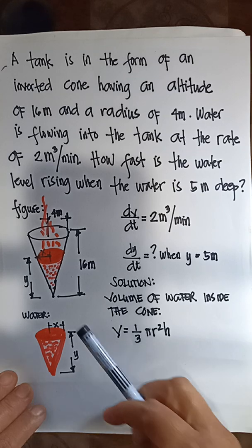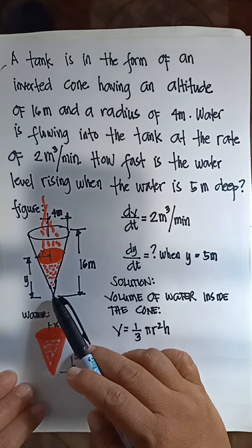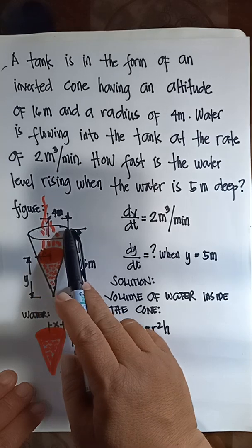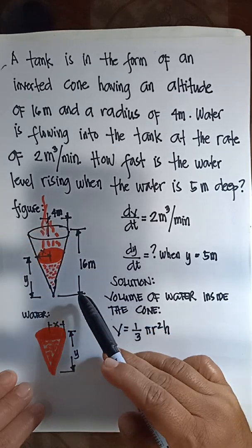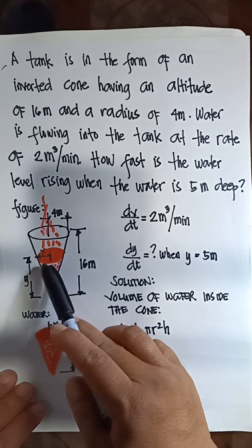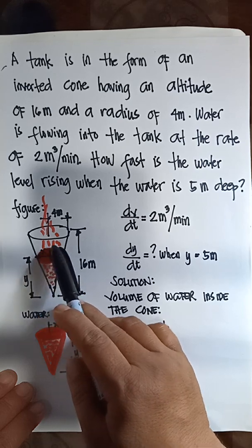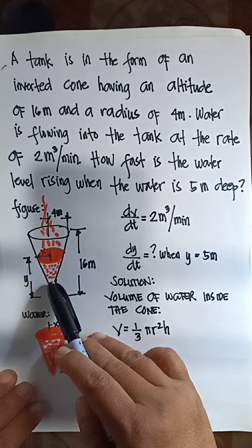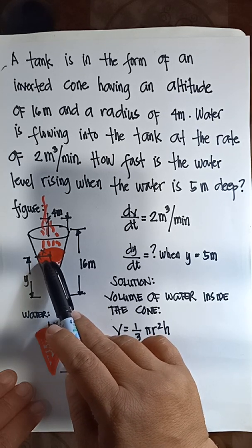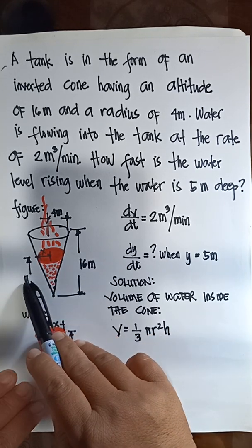We have here our figure. This is a form of inverted cone wherein the radius of the cone is 4 meters and the height of the cone is 16 meters. The red color here represents the volume of water inside the cone, wherein the radius of the water inside the cone at any time is x and its corresponding height at any time is y.